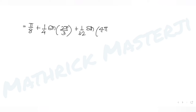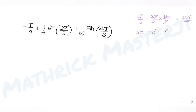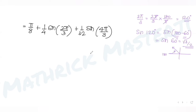Now let's find sin(2π/3) and sin(4π/3). Converting 2π/3 to degrees: (2π/3) × (180/π) = 120°. So sin(120°) = sin(180° − 60°). Since 180° − θ is in the second quadrant where sine is positive, we get sin(60°) = √3/2.